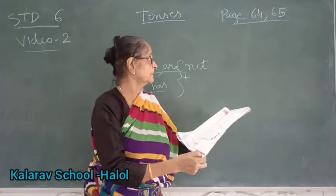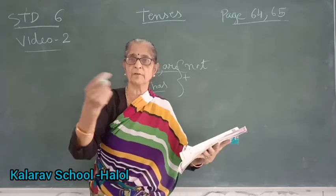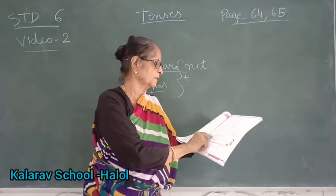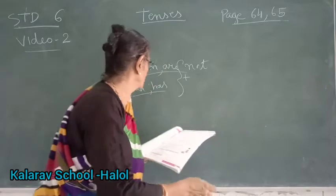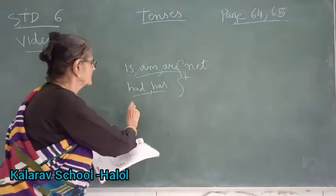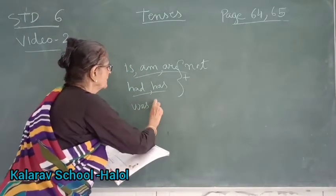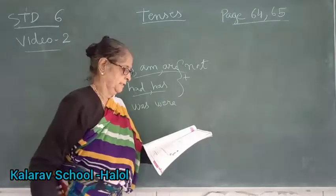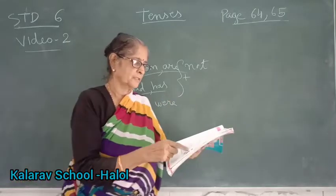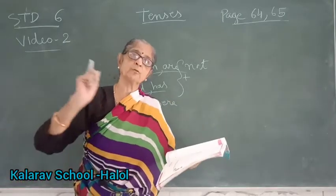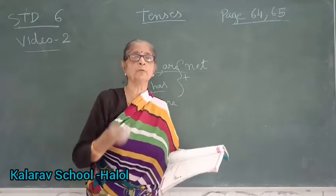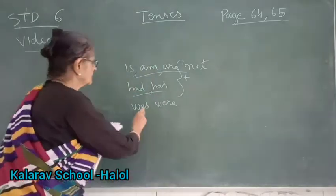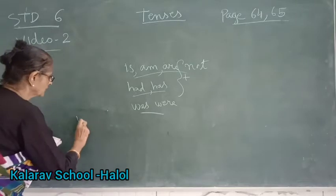This is page 63 — just giving one revision. 'Rohini was a simple girl.' So the negative will be: 'Rohini was not a simple girl.' We can add 'not' here after 'was'. Then you have to change it into a question.